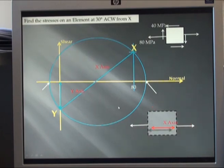If I want to draw an element at 30 degrees rotated anticlockwise from X—so X axis, 30 degrees anticlockwise—I want an element drawn here. On my circle, it would therefore be 60 degrees anticlockwise from X. Put my line through the circle.